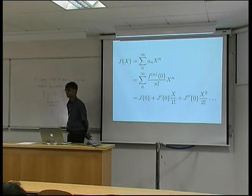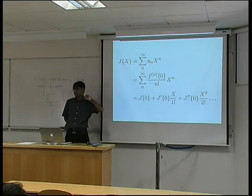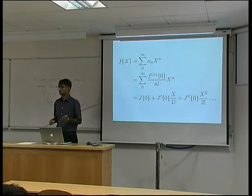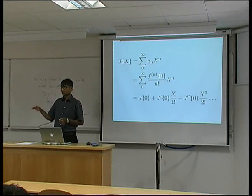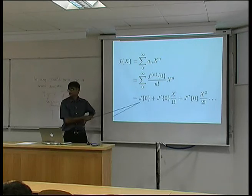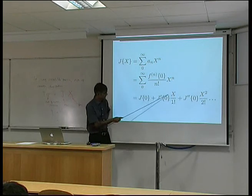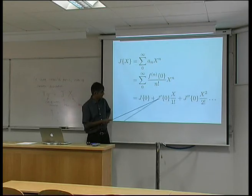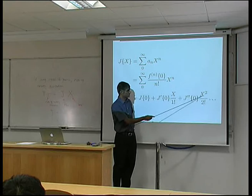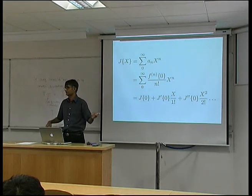Let me justify why J is proportional to X. Suppose the flux J is some function of the force X. I can expand it as a Taylor series about X = 0: J(X) = J(0) + (dJ/dX)|₀ · X + (d²J/dX²)|₀ · X²/2 + higher-order terms. That is the meaning of a Taylor expansion.